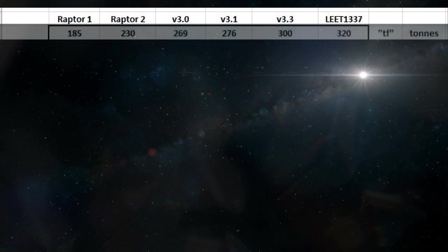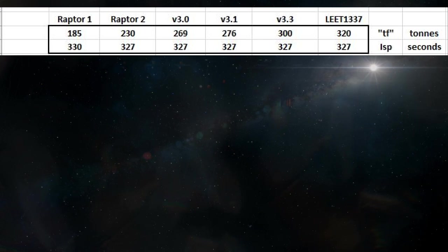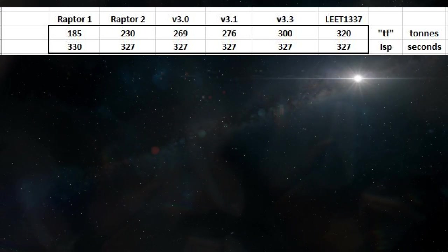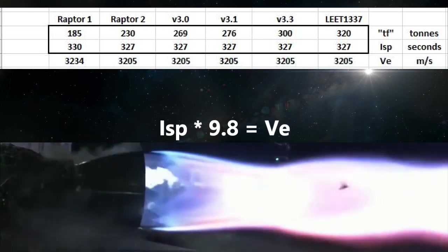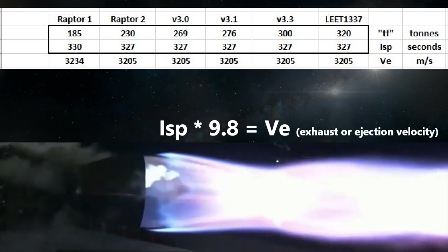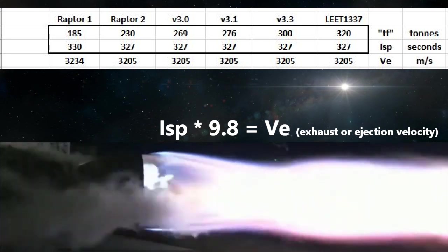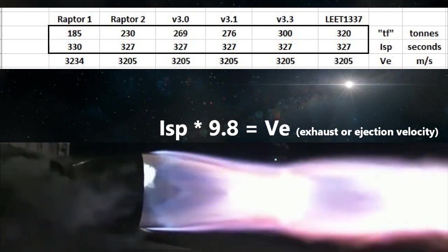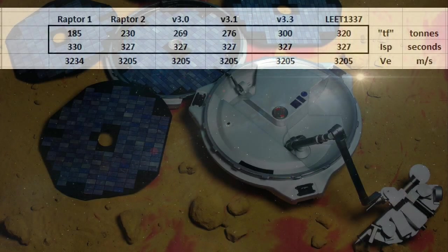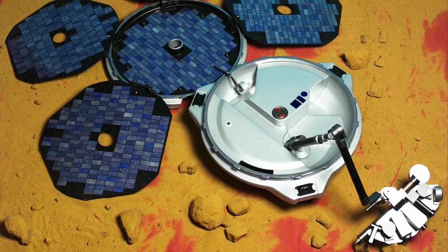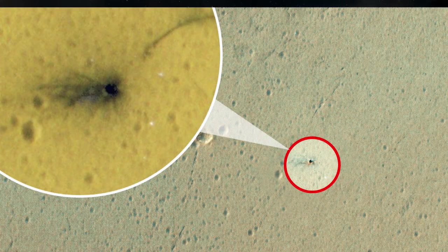The data includes engine designation, thrust in tons of force, and specific impulse in seconds. Having the specific impulse allows us to calculate ejection velocity — the speed of the exhaust coming out. We use specific impulse instead of ejection velocity because while ejection velocity differs between metric and imperial, specific impulse uses one metric — time — which is universal. We lost a good Mars lander because JPL was using feet per second and the European Space Agency was using meters per second.